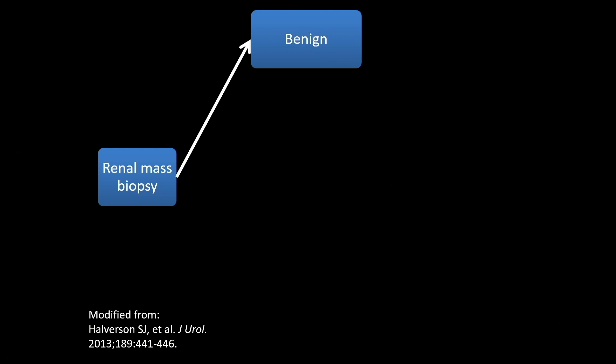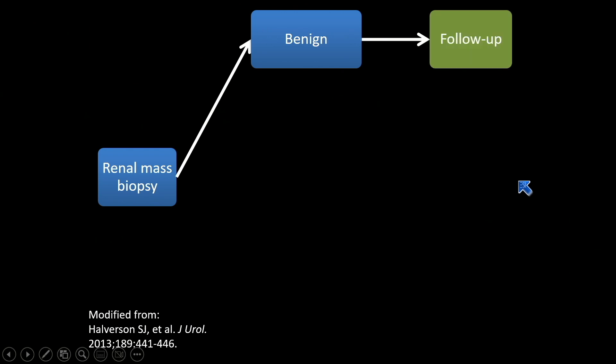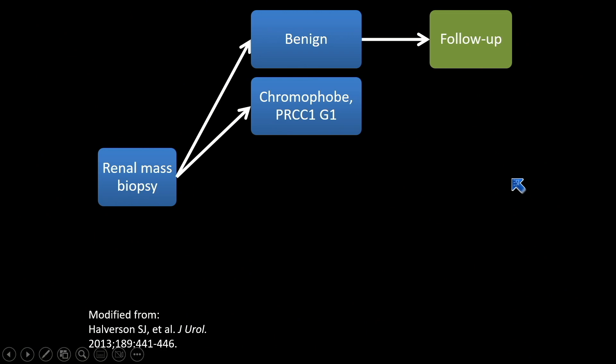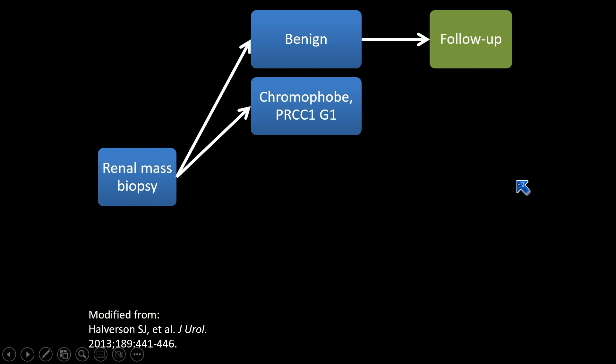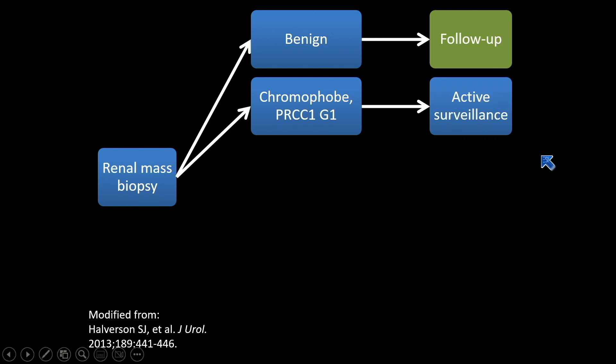Here's an example of what might happen based on a renal mass biopsy, from a publication in the Journal of Urology. If the histology is benign — like angiomyolipoma — then nothing further needs to be done. But if you have a very low-risk tumor, like a chromophobe renal cell carcinoma or a low-grade papillary renal cell carcinoma, this algorithm suggests that active surveillance would be reasonable.